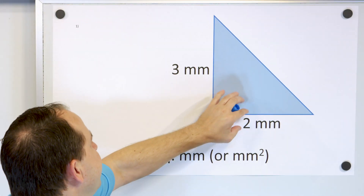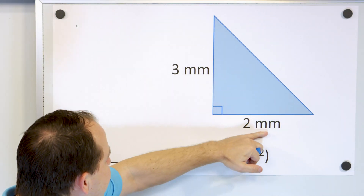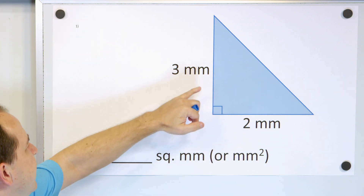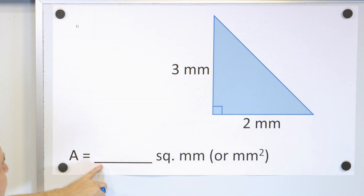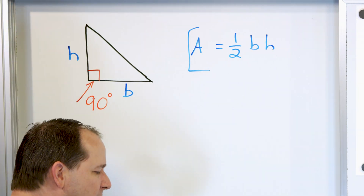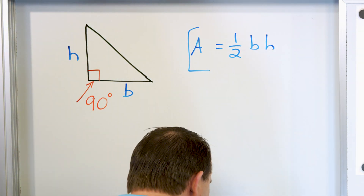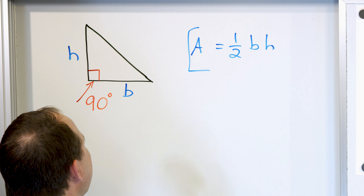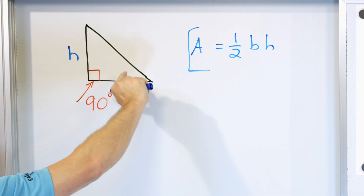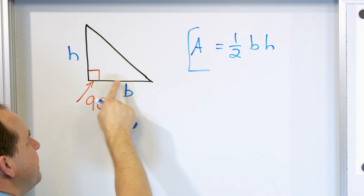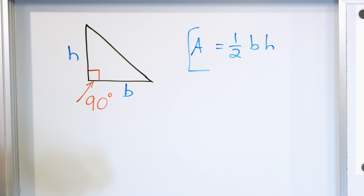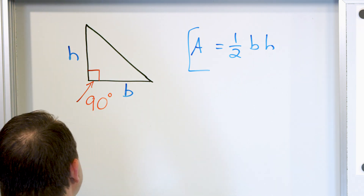For our first problem, it's going to be two millimeters for the base and three millimeters for the height, and we're going to calculate the area using this equation. But I want you to understand where it comes from — why is the formula one-half times the base times the height?